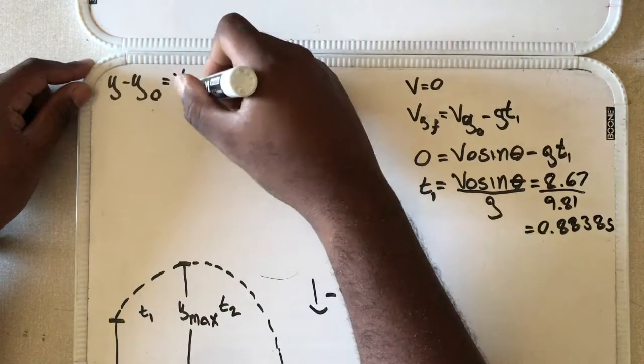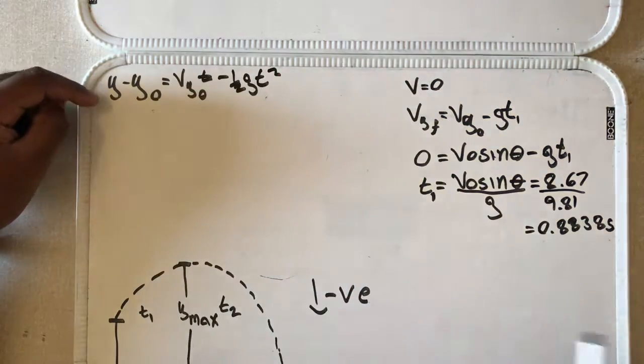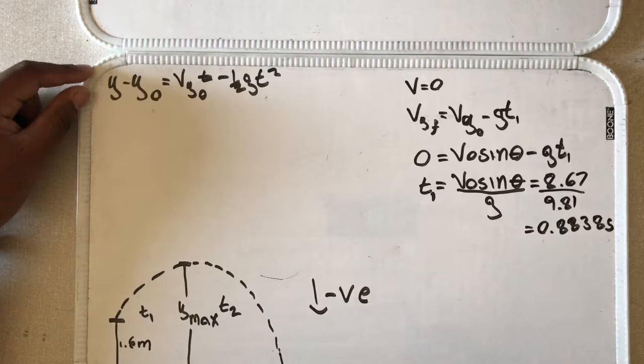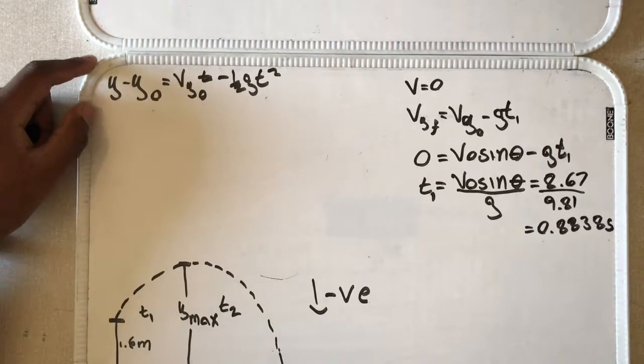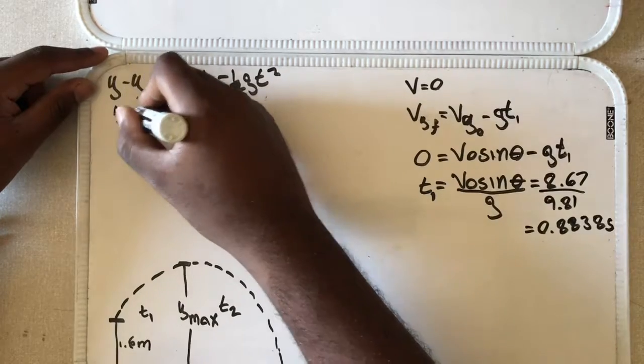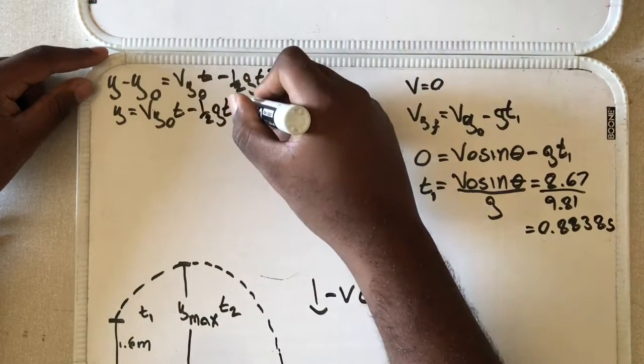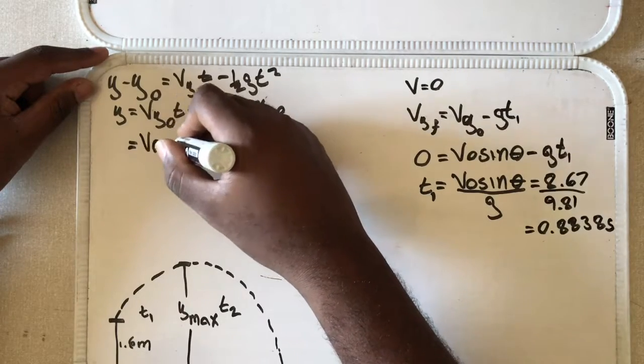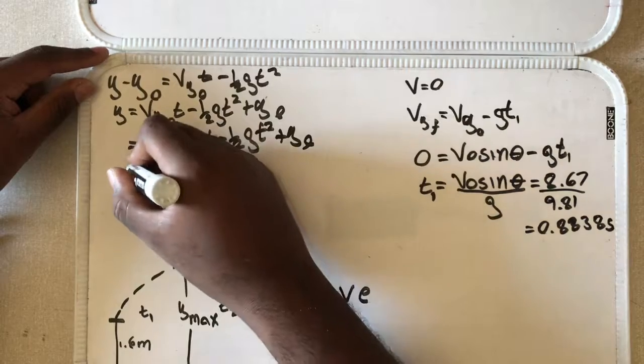The change in displacement is equal to V_y0 times t minus one half g t squared. And I'm looking to find the final height. And what's my initial height? My initial height is 1.6 meters above the ground. That has not changed because it left his hand at 1.6 meters above the ground. And we are taking our actual ground level as our zero. So everything is measured with respect to this line. And this just becomes an equation where you just have to plug in the values. Plus y_0. So this is V_0 sin(θ) times t minus half g t squared plus y_0.